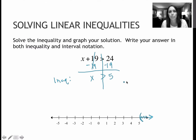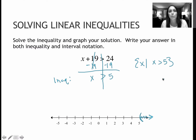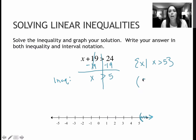They didn't ask, but if they asked for set builder, it would be all of the x's such that x is greater than 5. Sometimes they will ask for that set builder notation. The interval notation will go from 5 on to forever, so it's an open bracket on 5 and then on to infinity. It's always the open bracket when we're dealing with infinity.